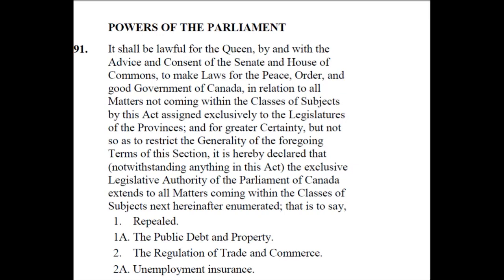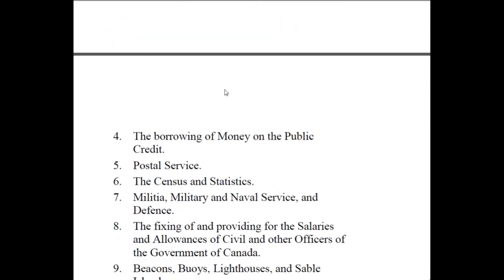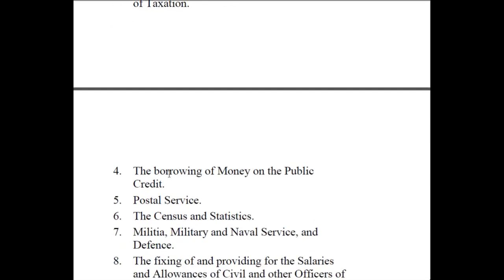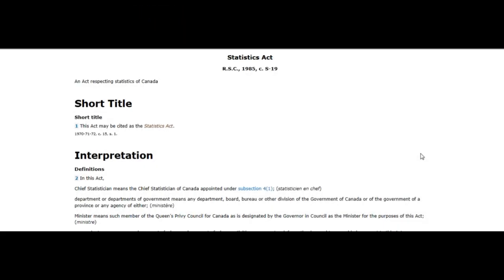We are looking into the Constitution Act of Canada 1867, Article 91, where it states: it shall be lawful for the Queen, by and with the advice and consent of the Senate and House of Commons, to make laws for the peace, order and good government of Canada. We further scroll down and see in Section 6 that it was lawful for the Queen to make laws in Canada concerning the census and statistics. This is where the legal right for Canada to create the census came to pass.